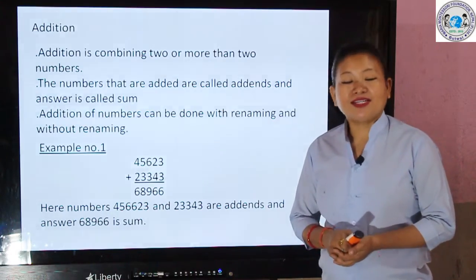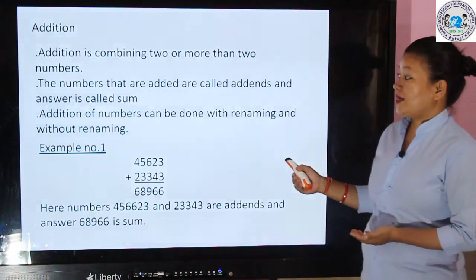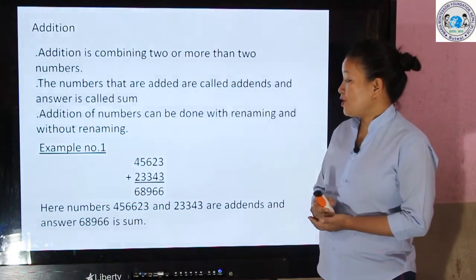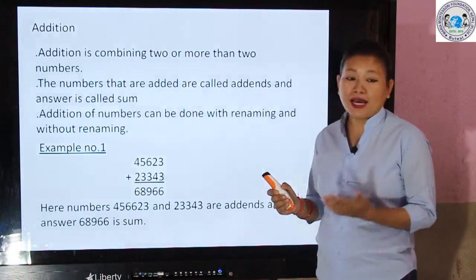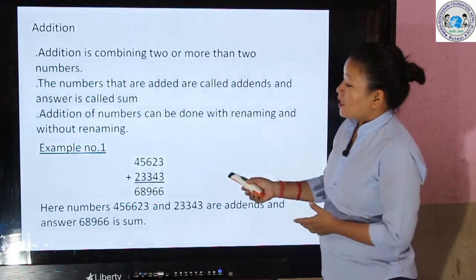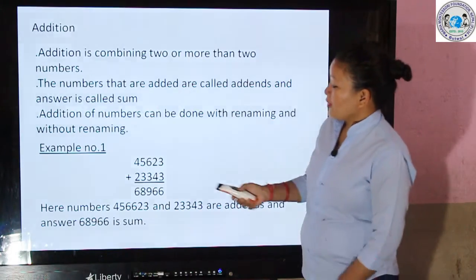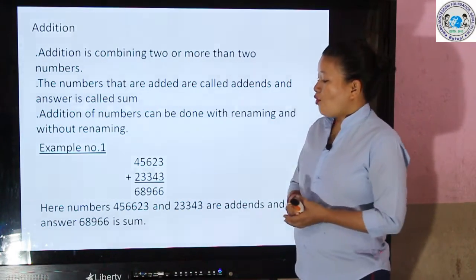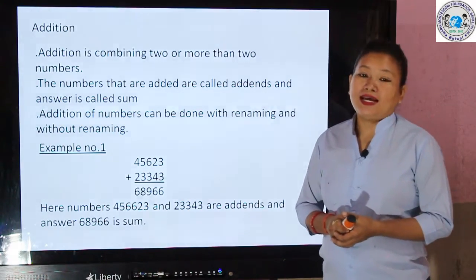Addition of numbers can be done with renaming and without renaming. I will show an example. Let's have a look — for example, here two numbers, 45623 and 233043, are added.